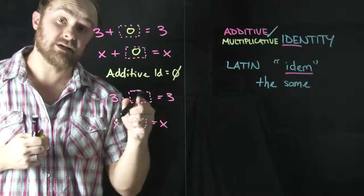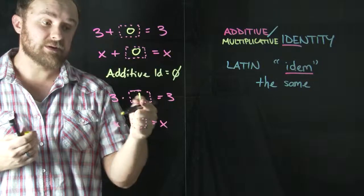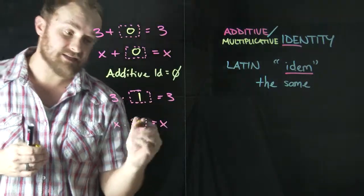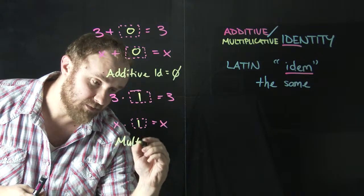Well, this isn't zero because again, that would make this equal to zero, not 3. The only thing I can put in that box is one, 3 times 1 is 3. And again, X times 1 is X. So the multiplicative identity would be one.